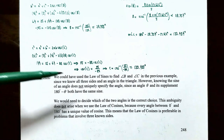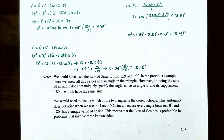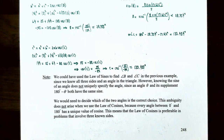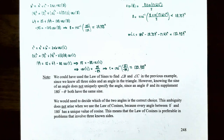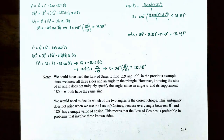However, knowing the sine of an angle does not uniquely specify the angle — there can be two ambiguous cases (no solution or two solutions), since an angle and its supplement share the same sine value. This ambiguity does not arise with the law of cosines, because every angle between 0° and 180° has a unique cosine value. The law of cosines is therefore the preferable method when you have all three sides of an oblique triangle.